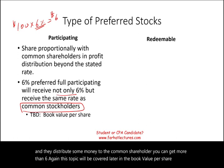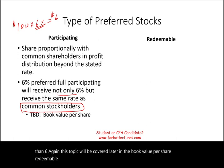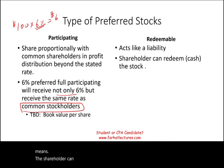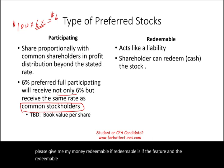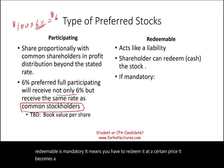Redeemable preferred acts like a liability. Redeemable means the shareholder can redeem the stock — cash it in and ask for their money back. If the redeemable feature is mandatory, meaning the company must redeem it at a certain price, it becomes a liability and is treated as such on the balance sheet.